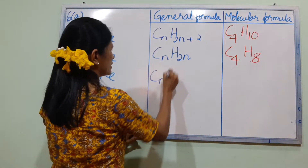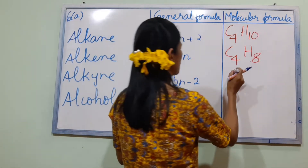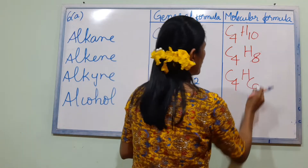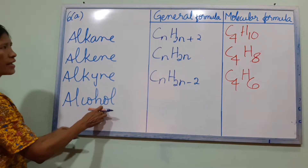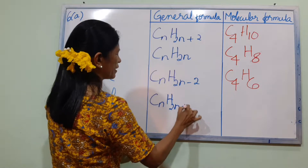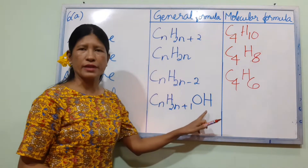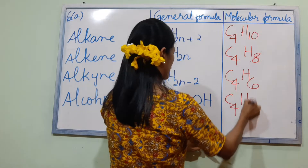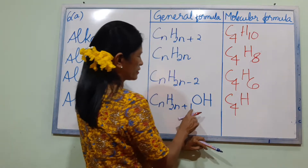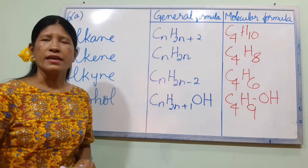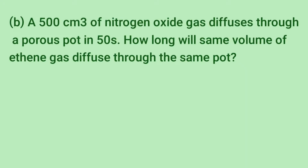Alkyne has the general formula CnH2n-2. The haloalkane has the general formula CnH2n+1.